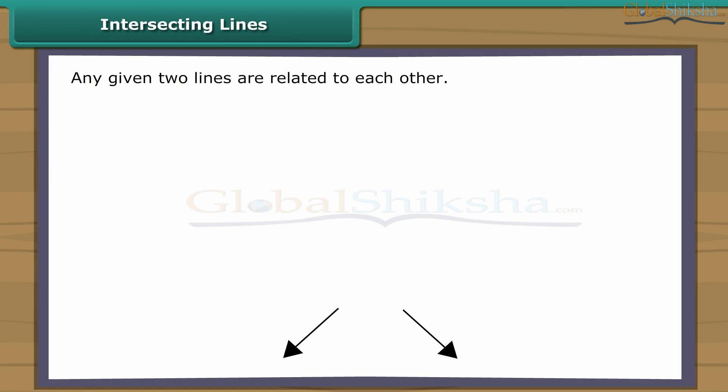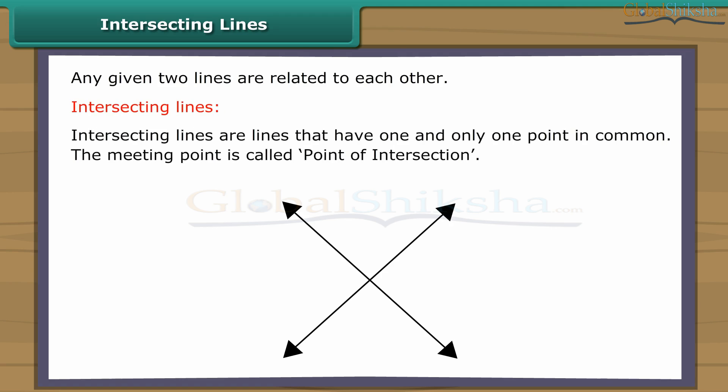Two lines are related to each other in different ways. Let us look at each way separately. Intersecting lines are lines that have one and only one point in common. This meeting point is called the point of intersection.